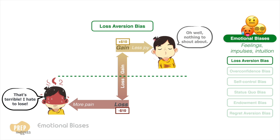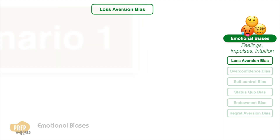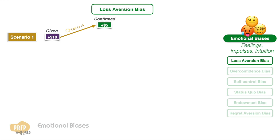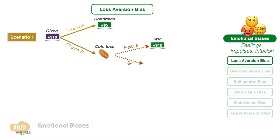Let's see if you exhibit loss aversion bias. In scenario one, you're given ten dollars and you have a choice to either receive an additional five with certainty, or to flip a coin and win an additional ten if it lands heads up, or nothing if it lands tails up. Which would you choose?